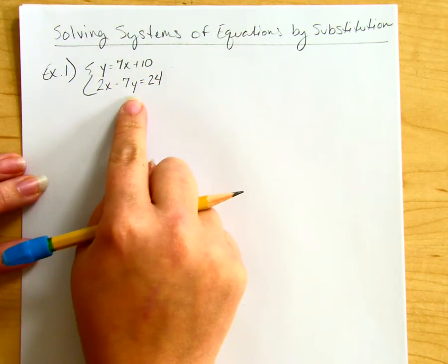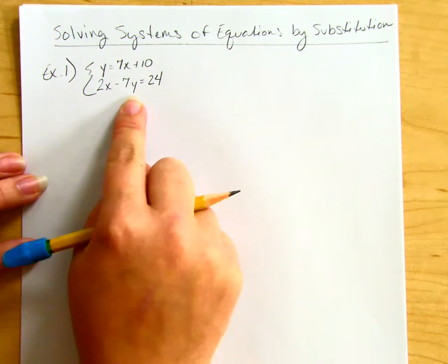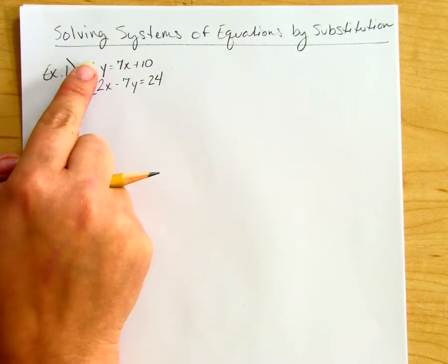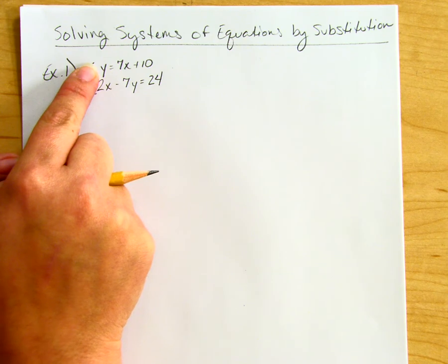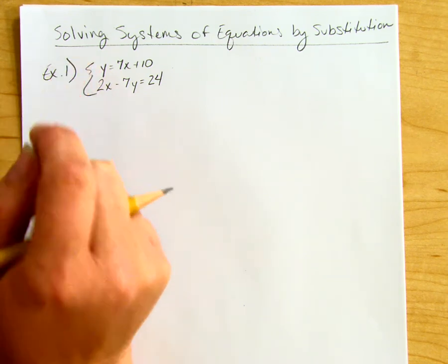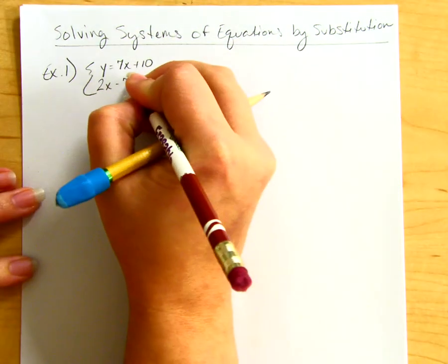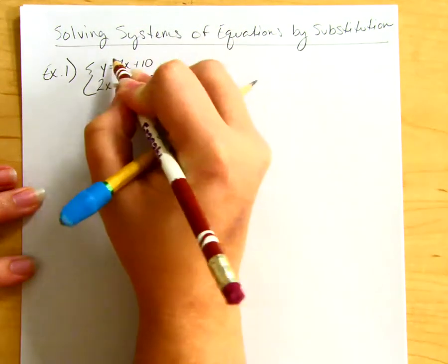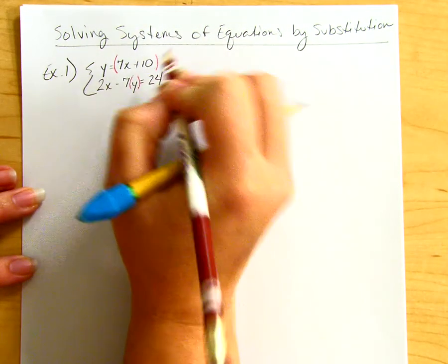In this instance you will substitute because one of your equations is solved for a variable. It doesn't matter which one—it could be x or y. In this case it's solved for y. So everywhere I see y in the second equation, I'm going to substitute what y equals from the first equation.